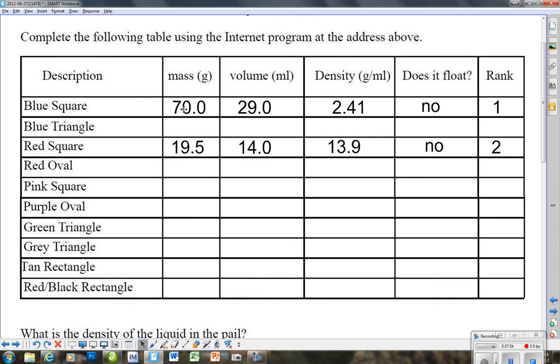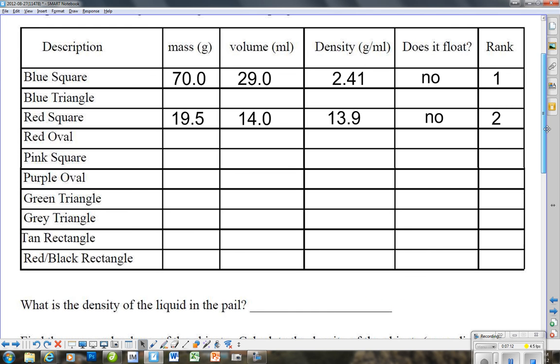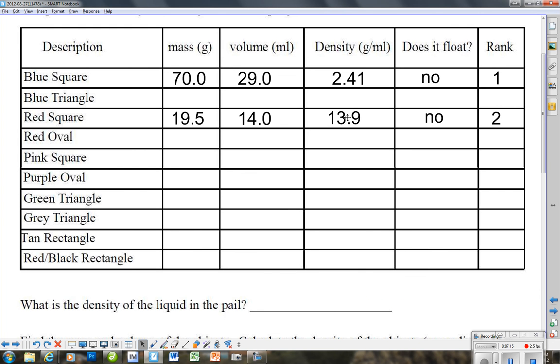Which object has the greatest mass? Well we look over here and the blue square wins on the mass as well. Which object has the greatest density? Well we just figured that one out, that was 13.9 for the red square.